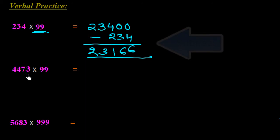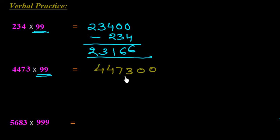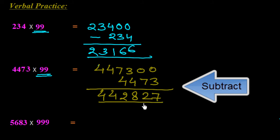Here we have 4473 to multiply with 99. There are 2 digits again in the series of 9s, so we add two zeros on the right side: 447300. Now we subtract 4473. So: 10 minus 3 is 7, 9 minus 7 is 2, 12 minus 4 is 8, 6 minus 4 is 2, and 44 — giving the answer 442827.